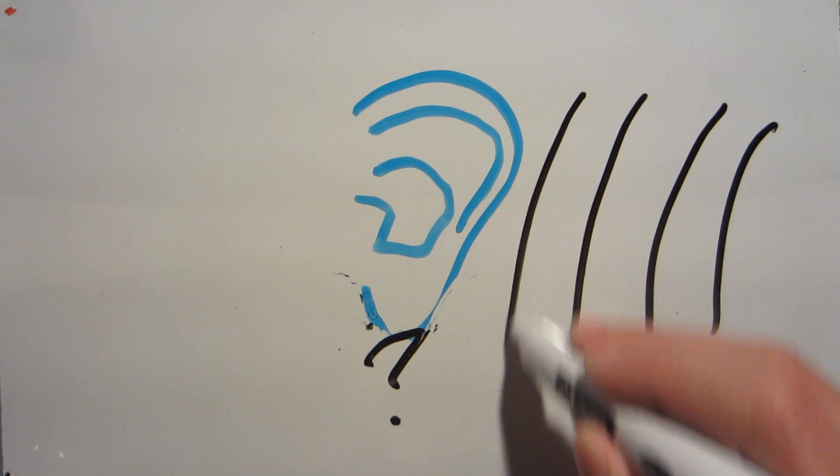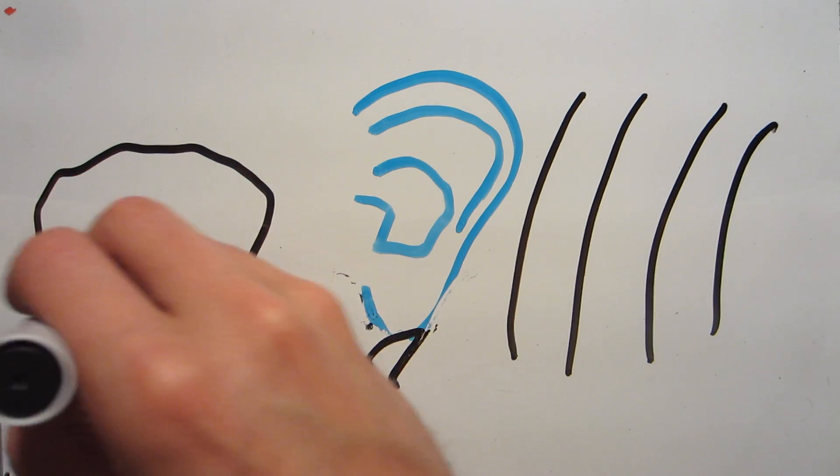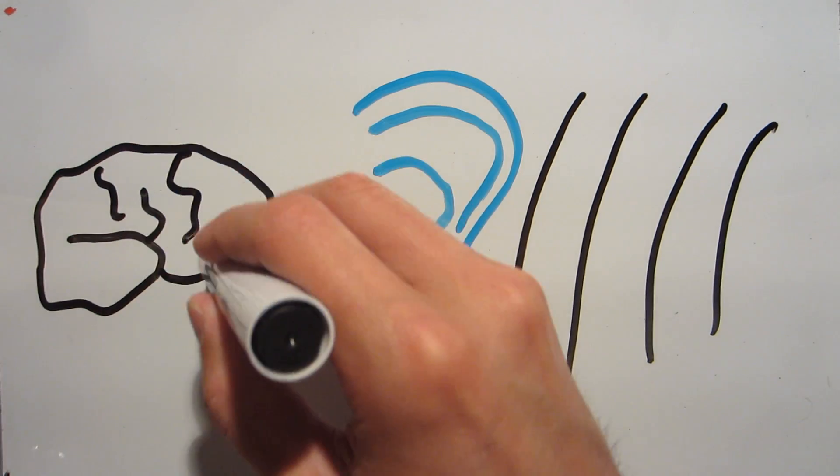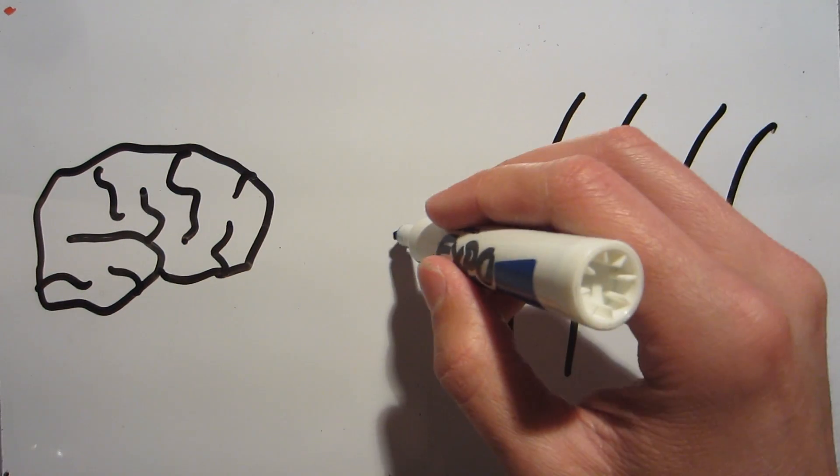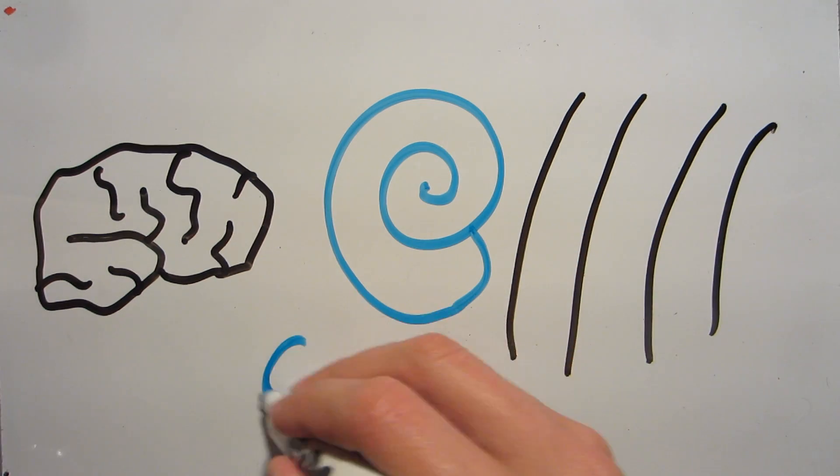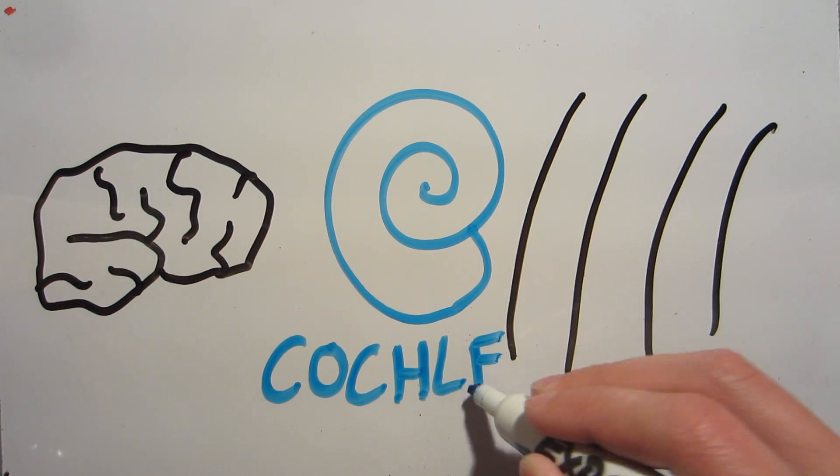Basically, it takes sounds, which are pressure waves, and transforms them into signals that the brain can interpret. This transformation involves a complicated, fluid-filled structure called the cochlea. It's about the size of a pea and shaped like a snail shell.